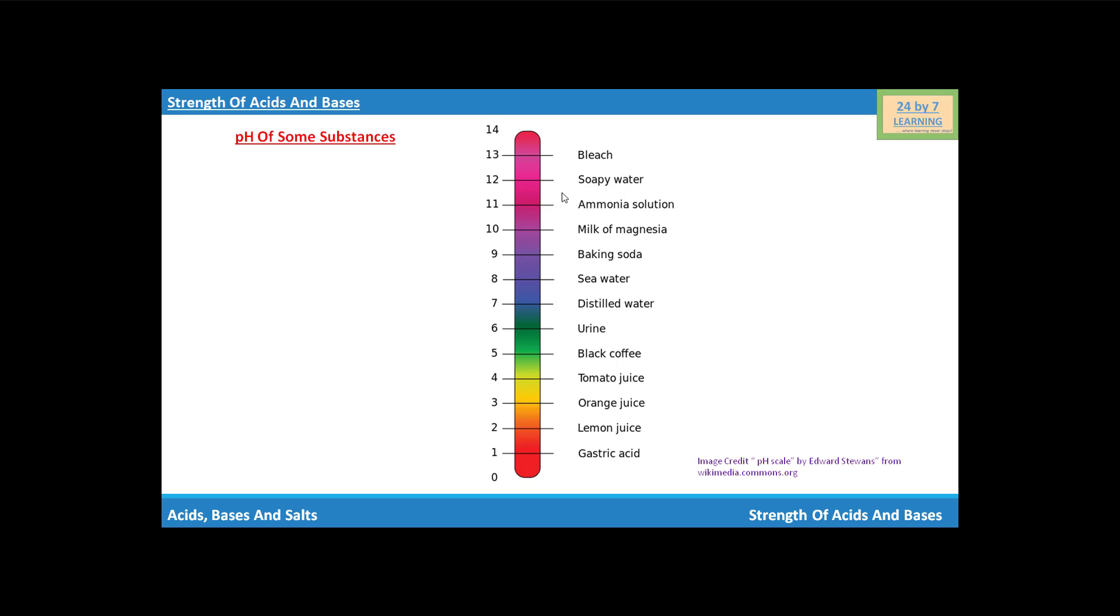Soapy water will have pH value of 12, and ammonia solution, that is a base, will have pH of 11. Milk of magnesia will have pH value 10.